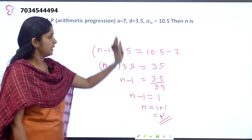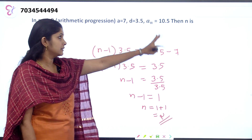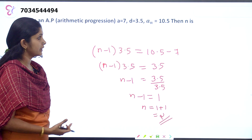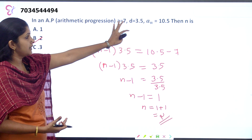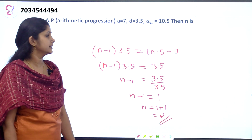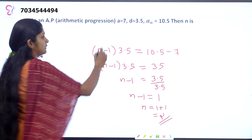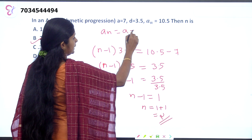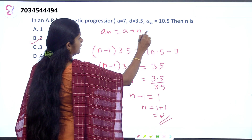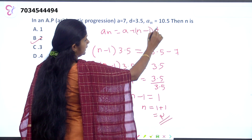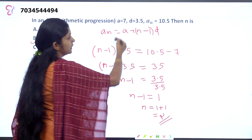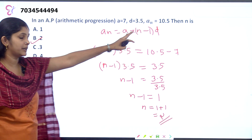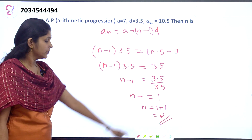This is a simple arithmetic progression problem. We identify the number of terms n and the nth term equation. With the common difference, we just substitute into the equation A plus (n minus 1) into D, rearrange for n, and the answer is 2.